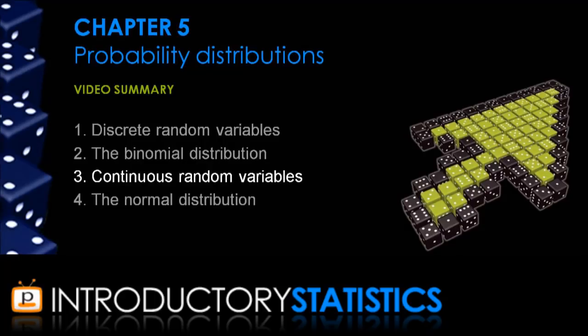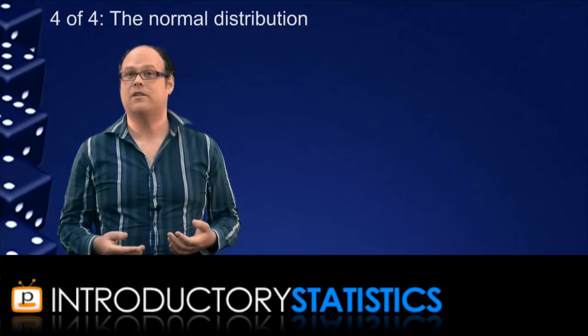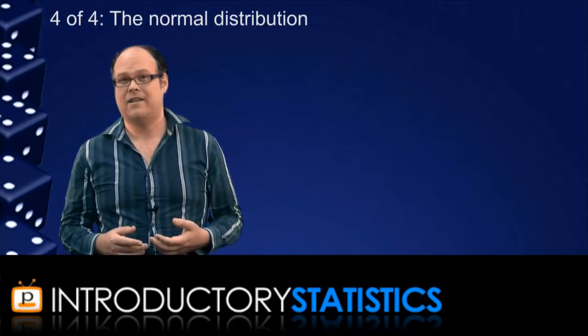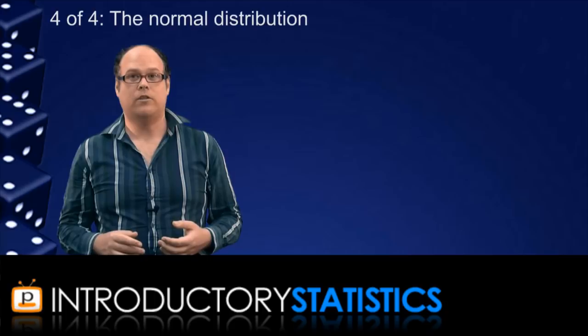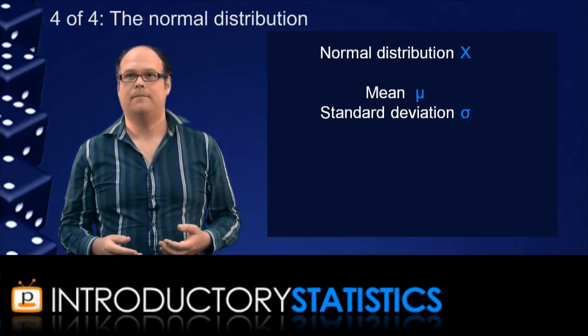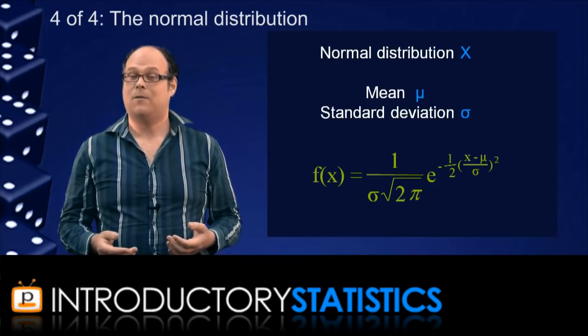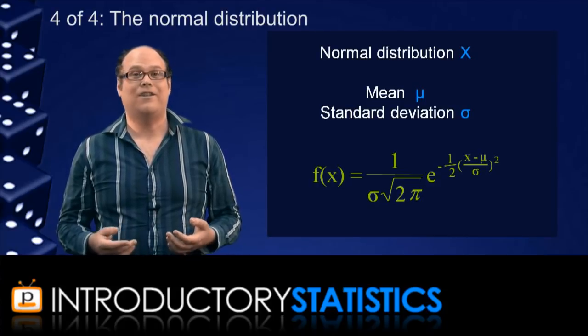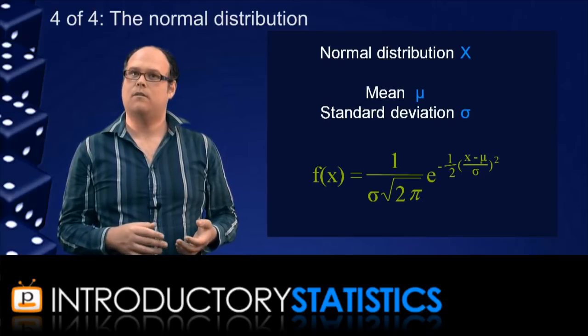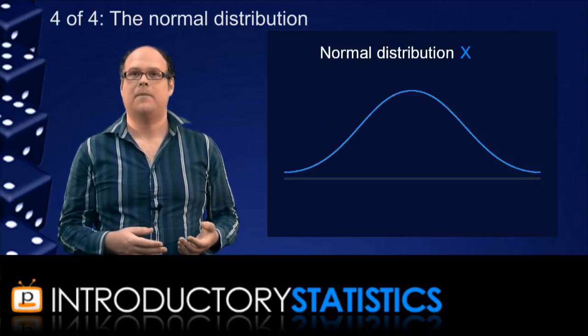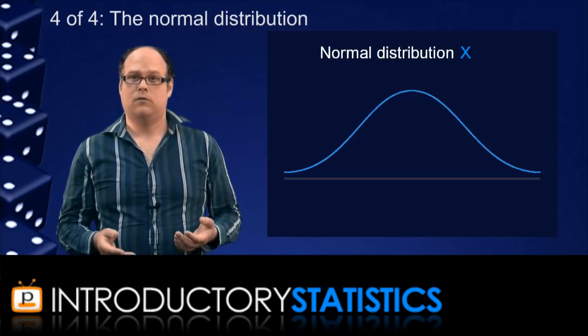So that's continuous random variables and the most common distribution for continuous random variables is the normal distribution. Like the binomial distribution, there are actually infinitely many normal distributions but once you've specified the mean and standard deviation you've specified a particular one. The probability density function for the normal distribution with mean mu and standard deviation sigma is presented here. It's quite nasty but don't worry, you won't need to actually use it. But just so you know, the general look of this probability density function is a smooth bell-shaped curve as shown here. All normal distributions will look more or less like this.